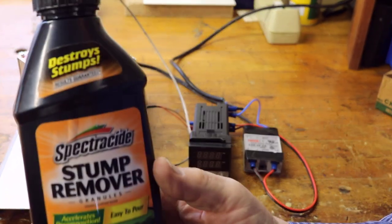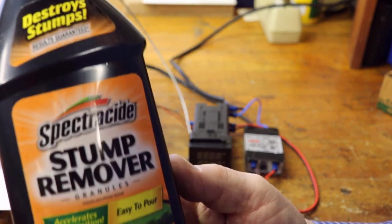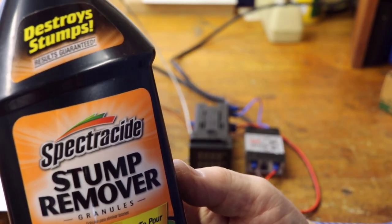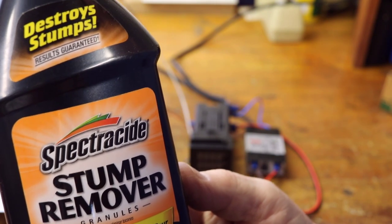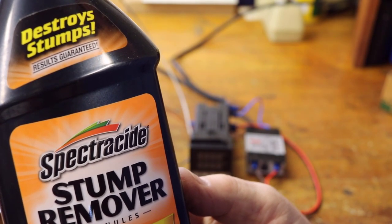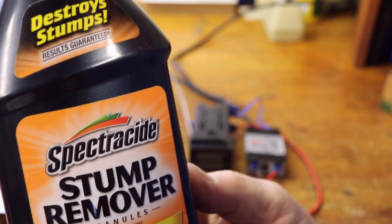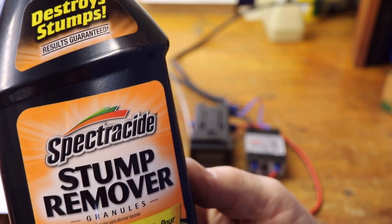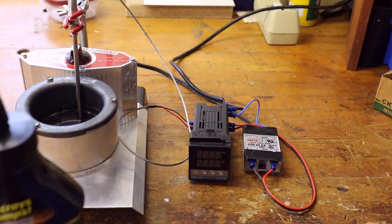One of the ideas somebody put forward was to use this stuff, which is mostly apparently potassium nitrate, and I think it's probably pretty good at removing stumps. It's an oxidizer and so it should break down that wood pretty well, but the short answer is it doesn't work very well.